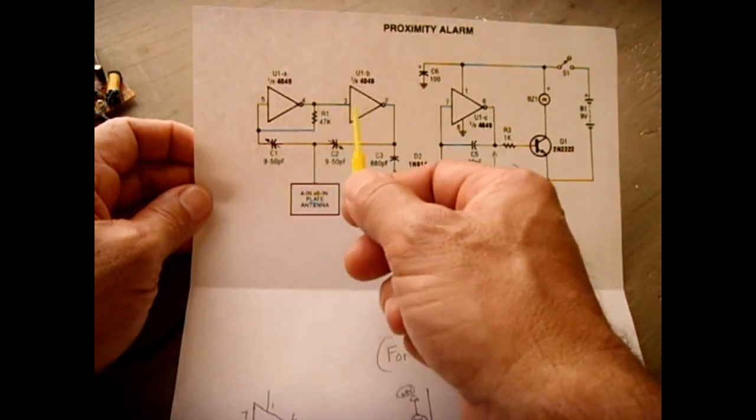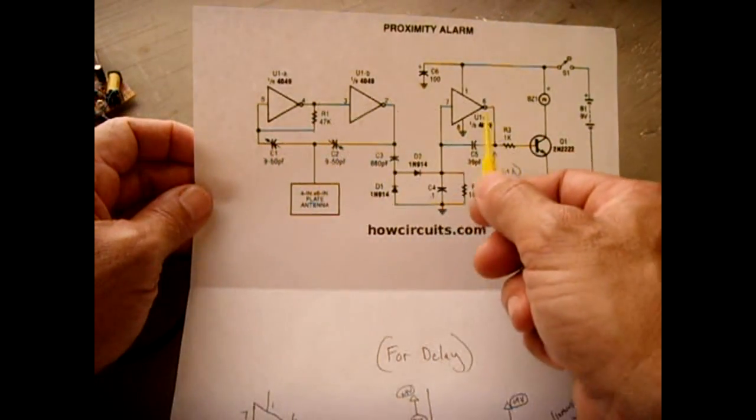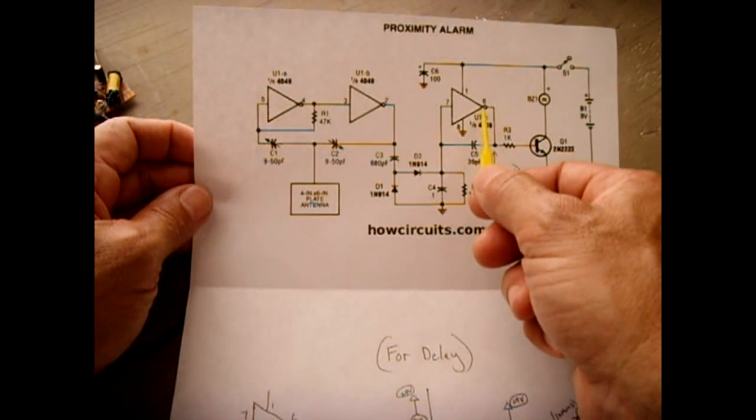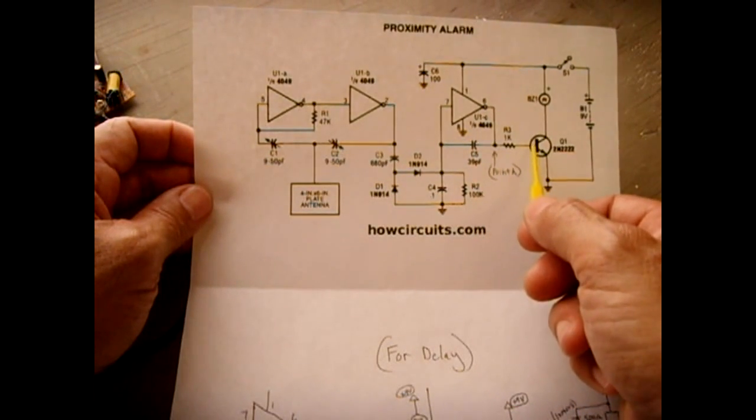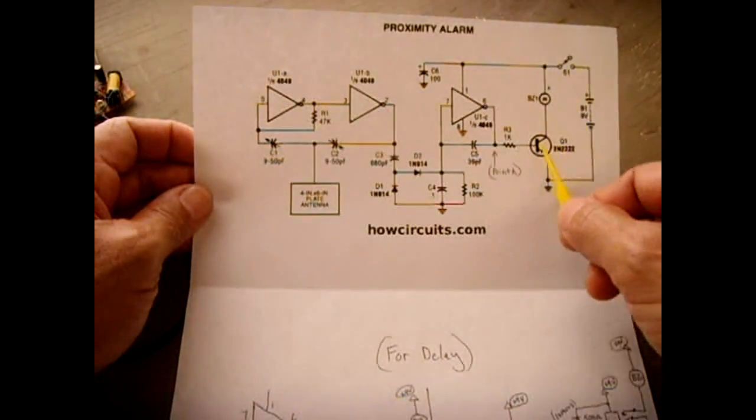When you upset the balance, that causes the transistor right here, causes pin 6 to go high, sending power into the base of this NPN, turning on the buzzer.